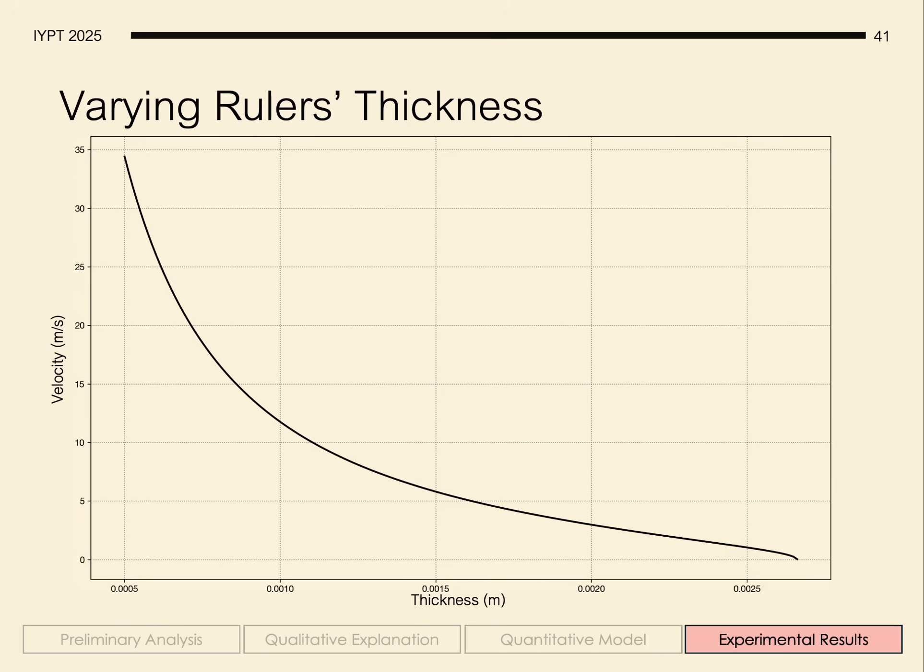Looking at the effect of varying thickness gives us some very important insight. By looking at the point where the velocity is zero, we can actually see a critical point at which the thickness is too thick, the rulers are too thick for the ball to be ejected, which is actually what we noticed in our observations.